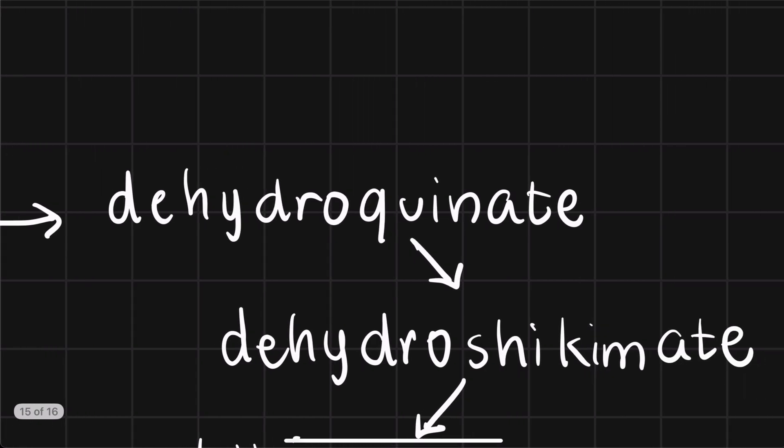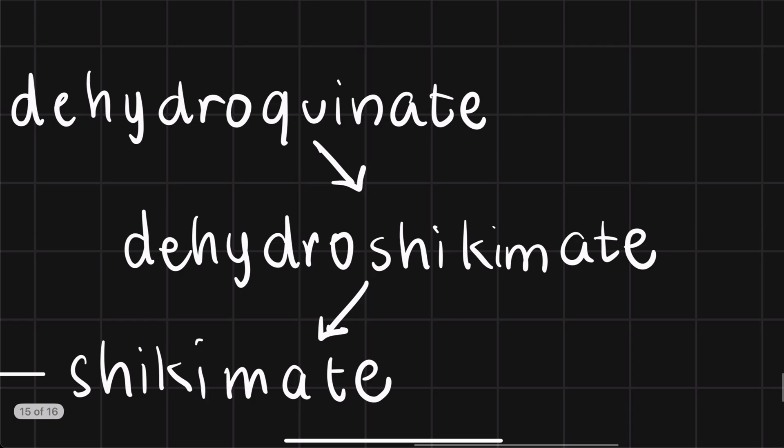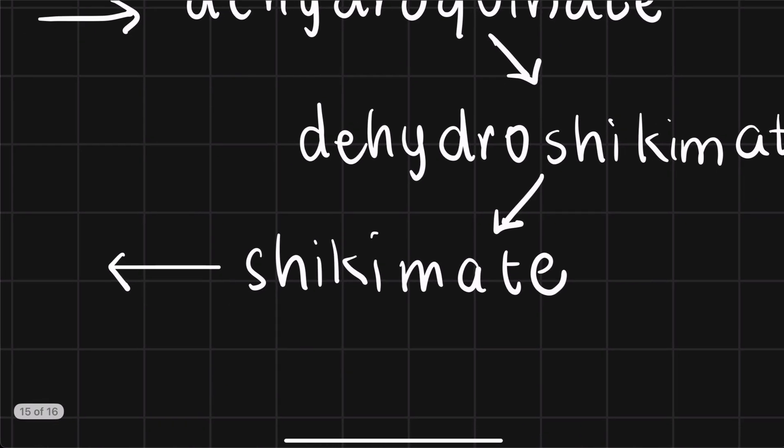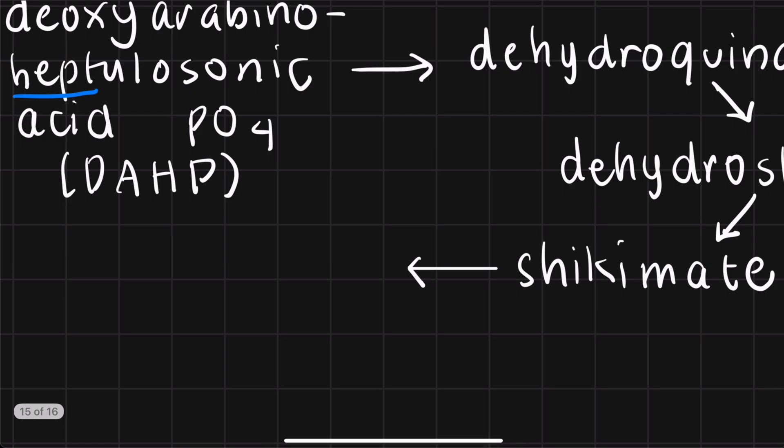From DAHP, we go to dihydroquinate, and then dihydroshikimate, and then shikimate. Now, as I said earlier, this is far from the end. So we want to go forward, and the next step after that is just the addition of phosphate. So shikimate is converted to shikimate phosphate.